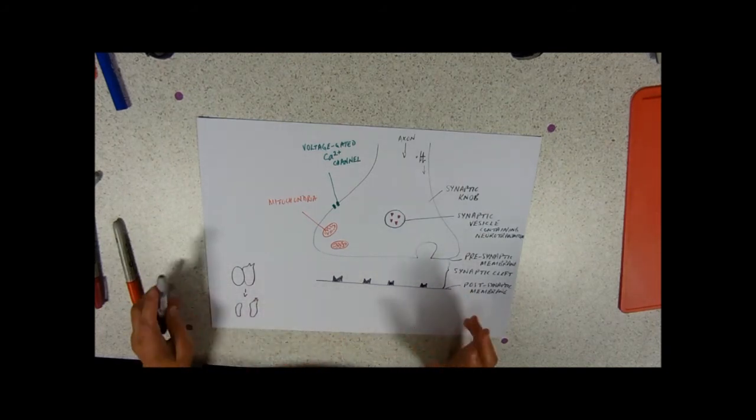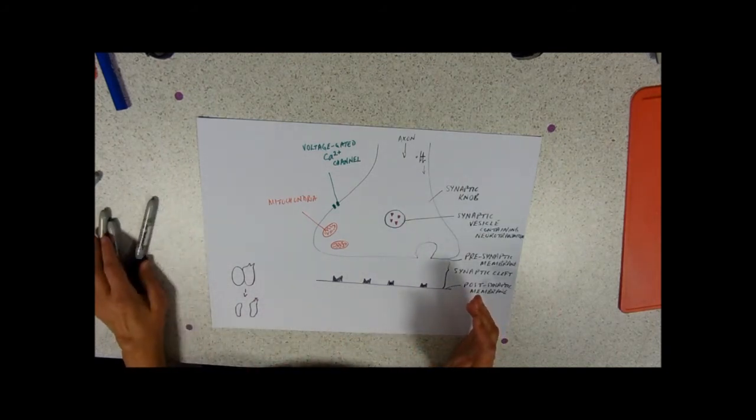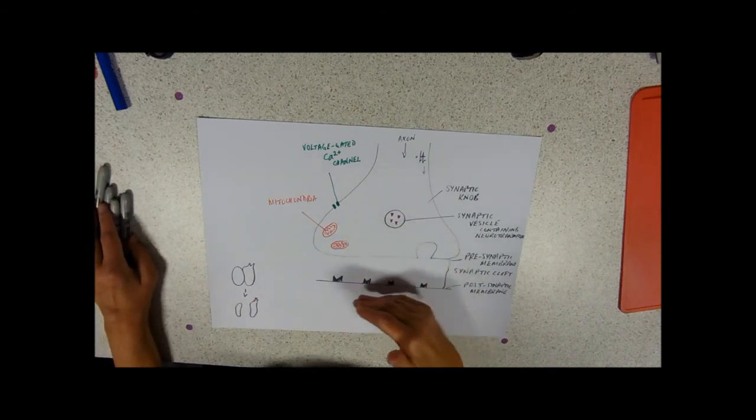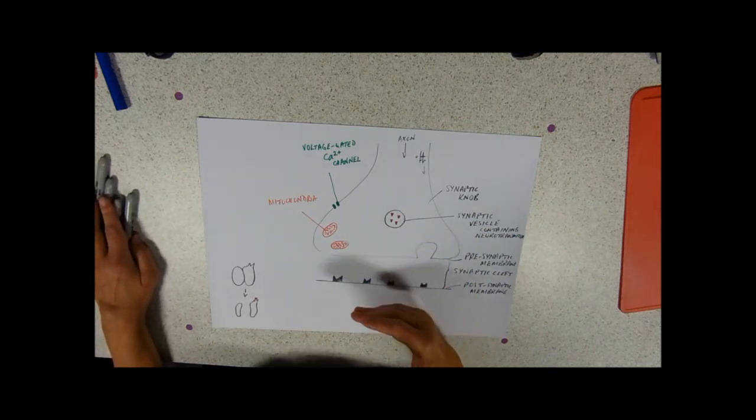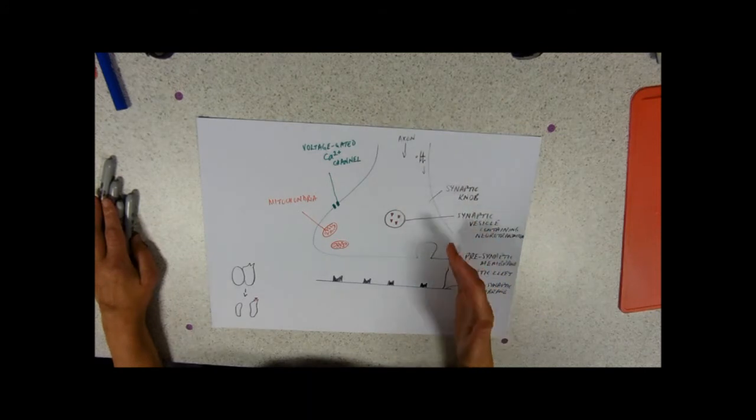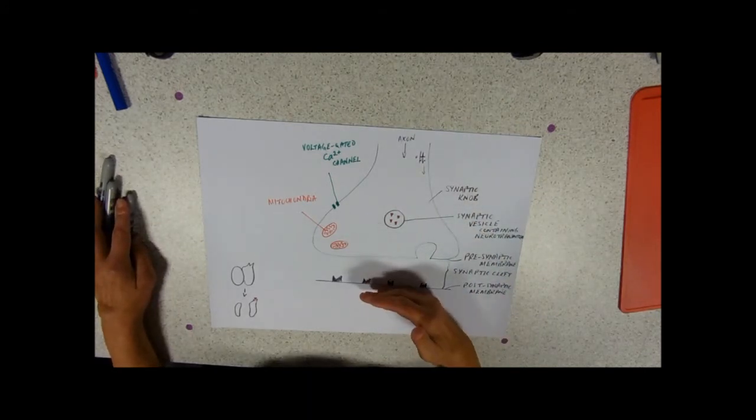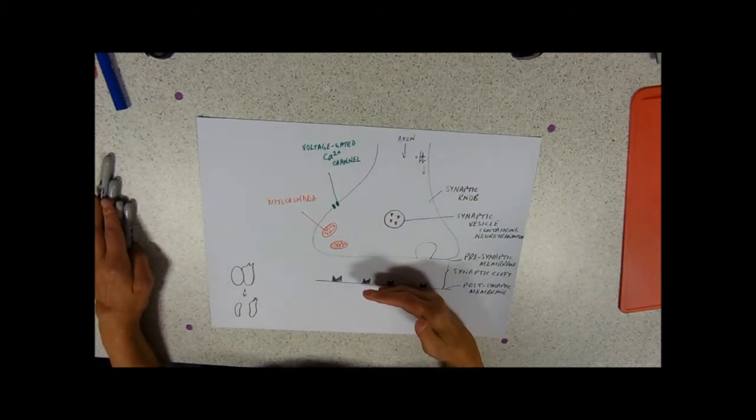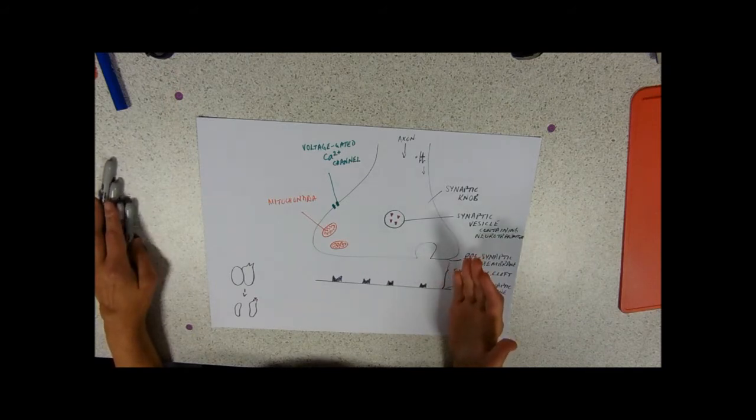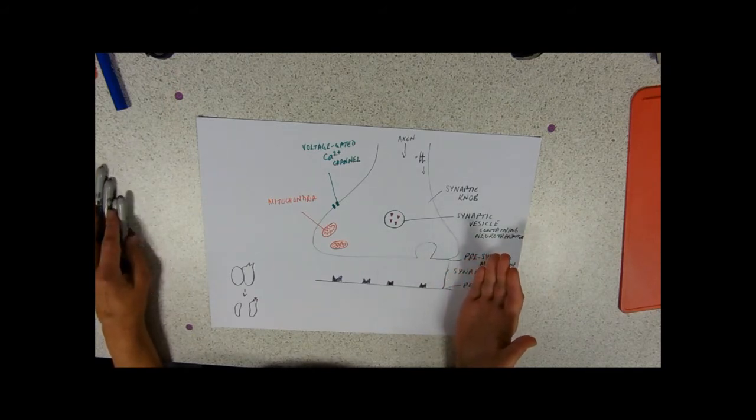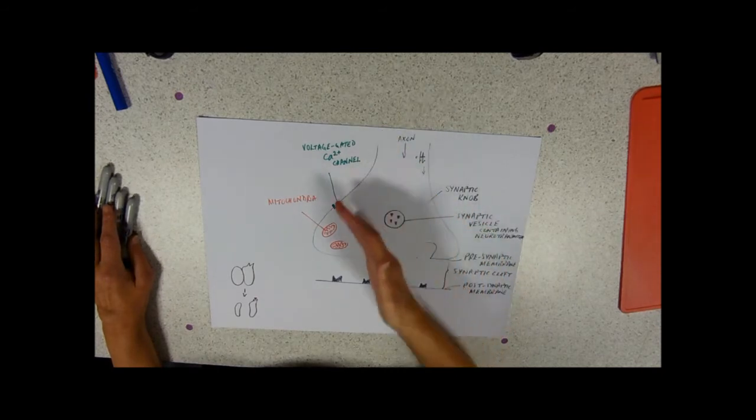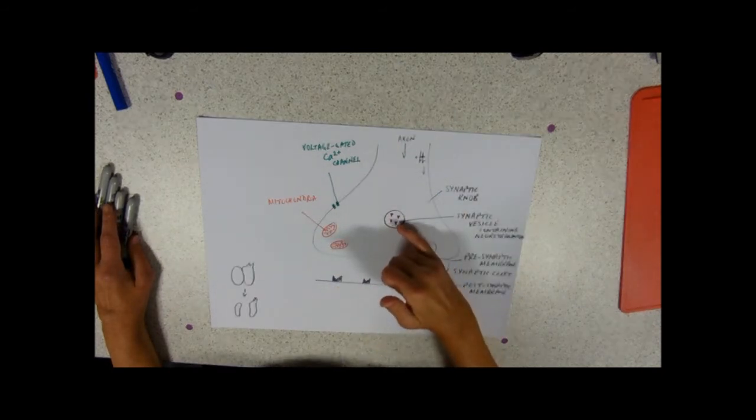And that gap is far too big for any electrical changes in this membrane to cause electrical changes in this membrane, which is what we want. So, we've got depolarizations, and we want to have depolarizations in this membrane as well. And so, the signal now changes from being an electrical impulse into a chemical stimulus.